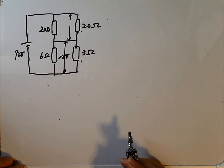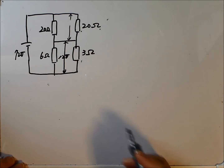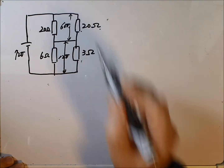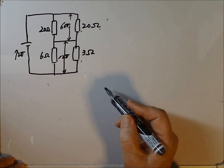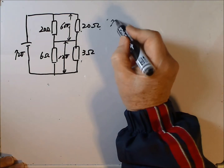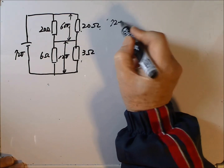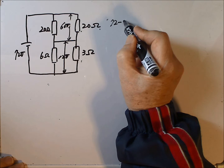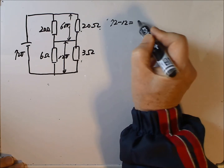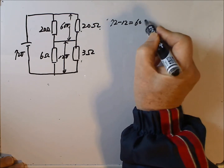The voltage of the resistance 20 ohm is 60 volts, because it is 72 minus 12 equal 60 volts.